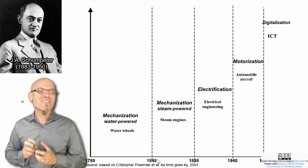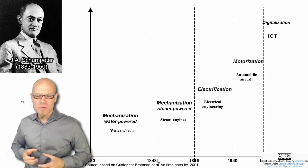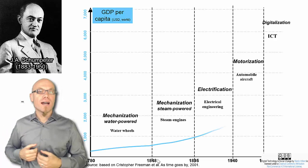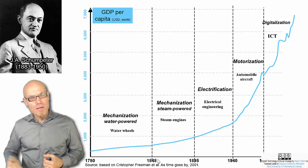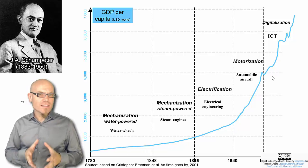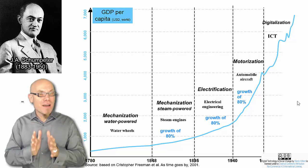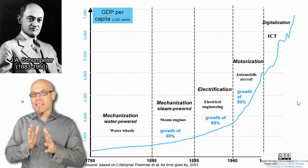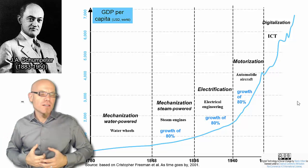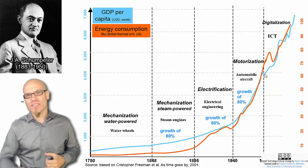Empirical data fits this theory impressively well. Using economic progress of humankind as a performance indicator on the y-axis, we see periods of growth between the long waves: the economy has grown about 80% during each period, meaning the economic capacity is multiplied by a factor of 1.8—that's what makes it exponential. We can also use energy consumption—the potential of humankind to do work—as another performance indicator, and plotting that also gives us this exponential tendency.